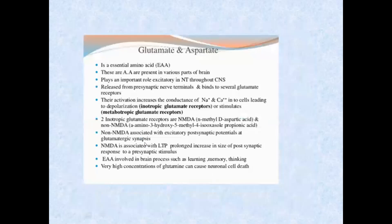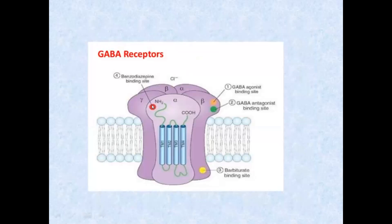The GABA receptor has three subunits: alpha, beta, and gamma. It has different binding sites — benzodiazepine binding site, GABA binding site, GABA antagonist binding site, barbiturate binding site, and GABA agonist binding site. That is why benzodiazepines and barbiturates are said to bind to the allosteric site — meaning they do not bind to the main active site but to another site on the receptor.